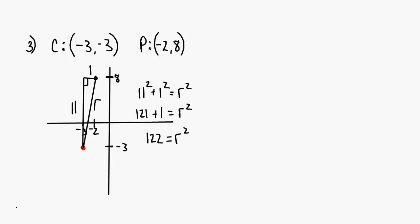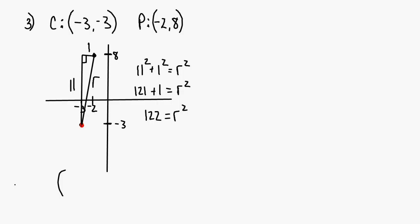So your equation is going to be x plus 3 squared plus y plus 3 squared equals 122, because that's where your r squared goes.